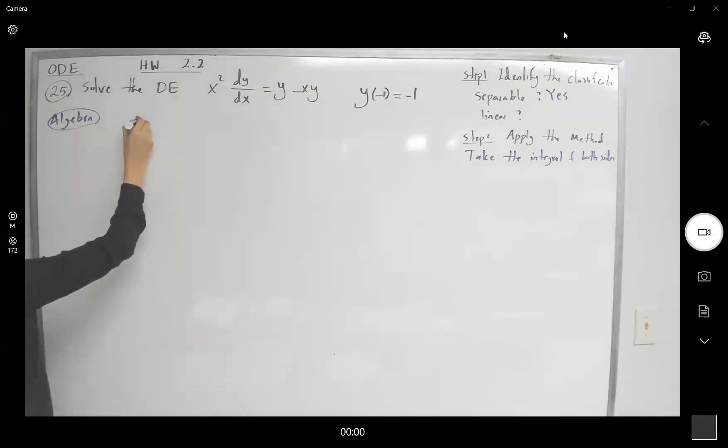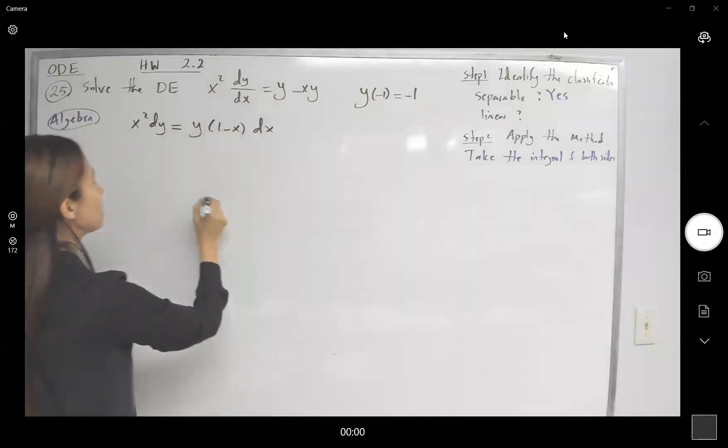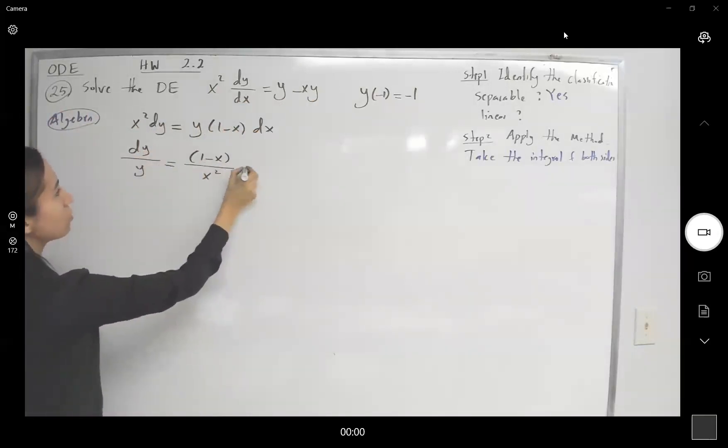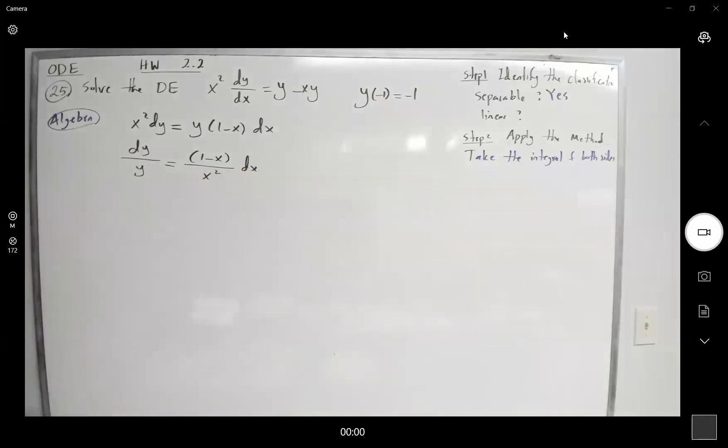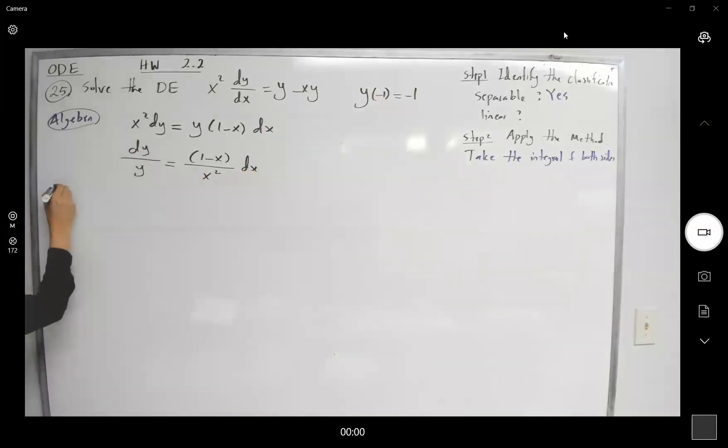You get x squared dy equals y times 1 minus x dx. Then you can divide by x squared, divide by y, and you get dy over y equals 1 minus x over x squared dx. So is it separable? It is separable. Let us do the calculus part.